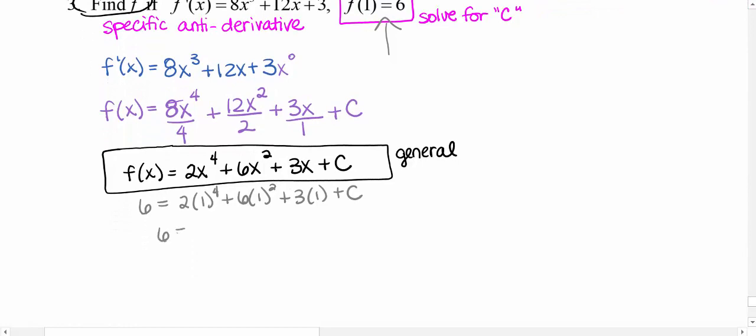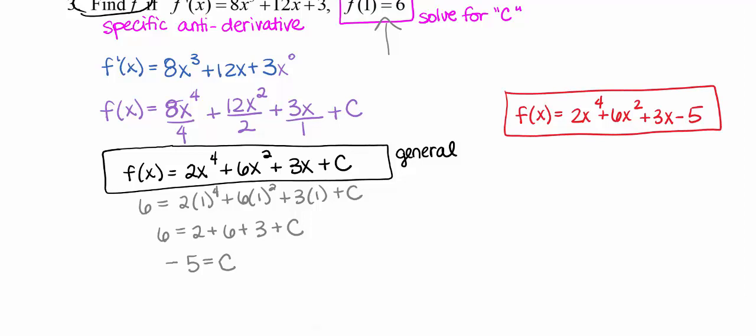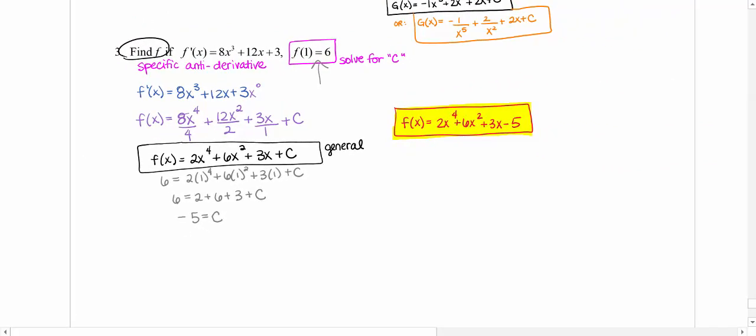So, 6 equals 2 plus 6 plus 3 plus C. So, what I know is that my specific function should be 2x to the 4th plus 6x squared plus 3x minus 5. My C was a negative 5. And that part is my final answer. Not the general in this case, because they gave me information that allowed me to solve for that specific antiderivative.